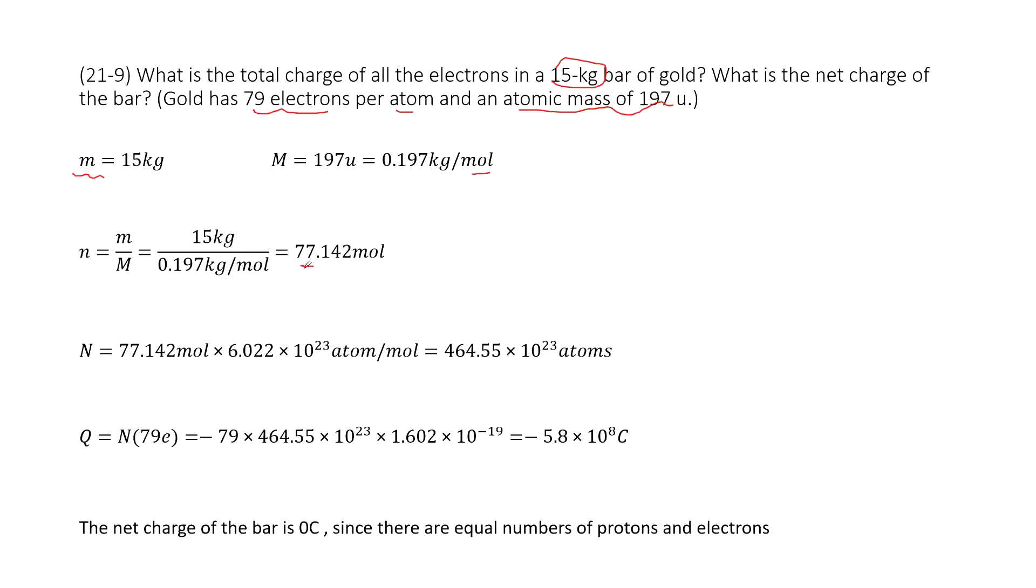Can you find the number of these atoms? Yes, you use the mol number times the constant. This constant we learned in previous chapters, right? This is just for one mol of object. It has 6.022 times 10 power 23 atoms. So now we have the mol number is 77. So in this way, you get the number of atoms.